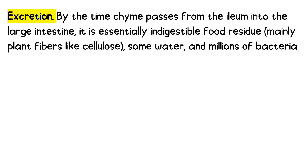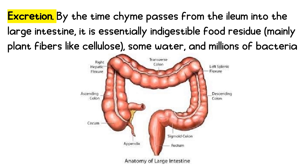Excretion: by the time chyme passes from the ileum into the large intestine, it is essentially indigestible food residue — mainly plant fibers like cellulose, some water, and millions of bacteria. The colon, the first part of the large intestine, absorbs most of the remaining water, leaving semi-solid waste material called feces. The feces are stored in the rectum, the last part of the large intestine. Excretion happens when these feces pass out of the body through the anus — in other words, what we call pooping. This is the last life process, the excretion, wherein we release all the indigestible food residue from the food we eat.